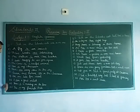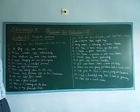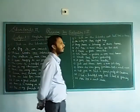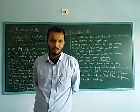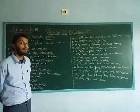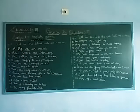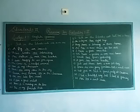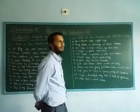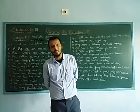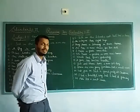Fifth number: the cow blank a useful animal. The answer is 'is' — the cow is a useful animal. Sixth number: this blank my classroom. The answer is 'is' — this is my classroom. So the answer is 'is'.